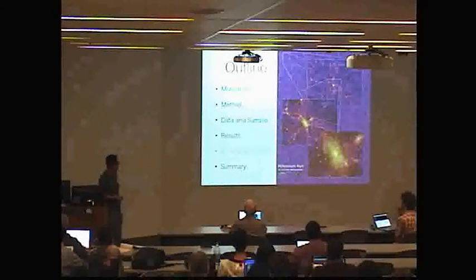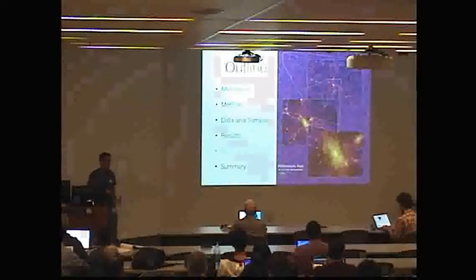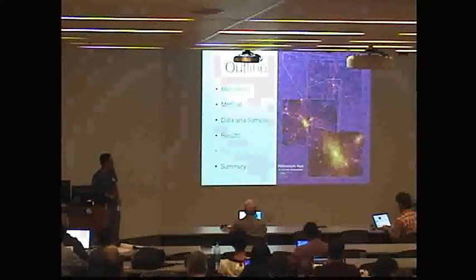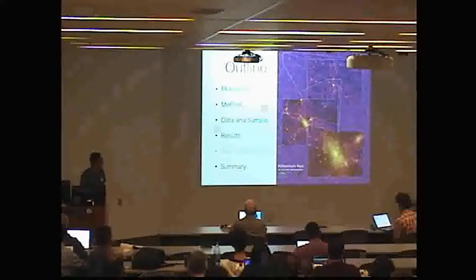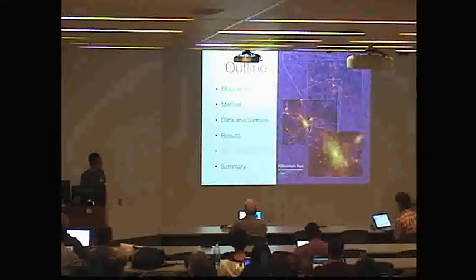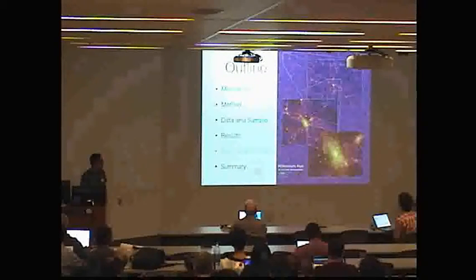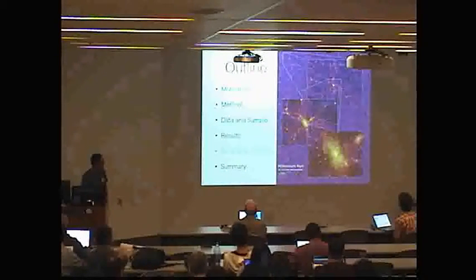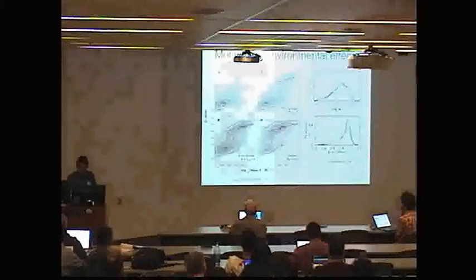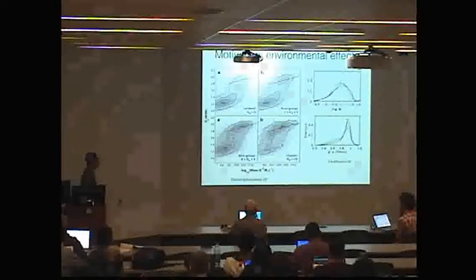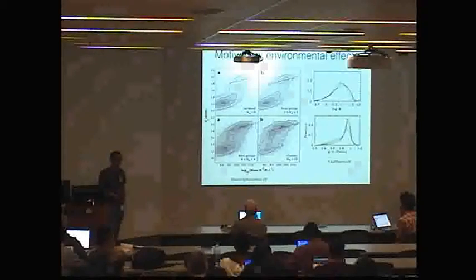If I have time, I will also talk a little bit about the outer disk problem, which I will mention later. So as you can see from this picture from millennium simulation, galaxies form in different large-scale structures. For example, in the clusters, or in the filaments, or in the voids.